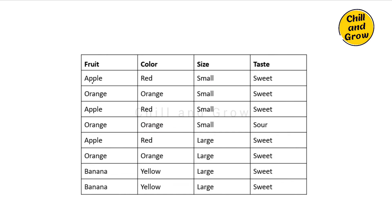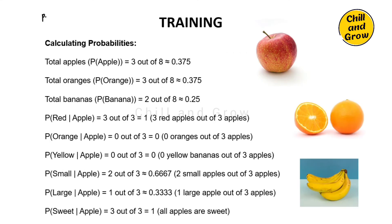Let's look at this dataset. Fruit is our category — Apple, Orange, Banana — three categories. The features are Color (red, orange, yellow), Size (small, large), and Taste (sweet, sour). Now let's see how we train the model.